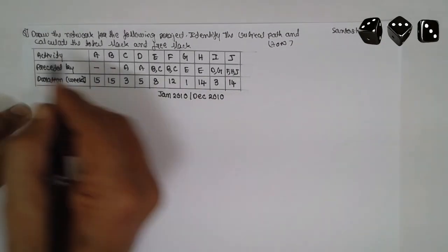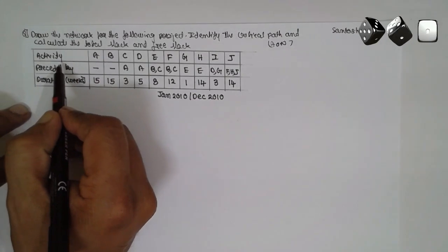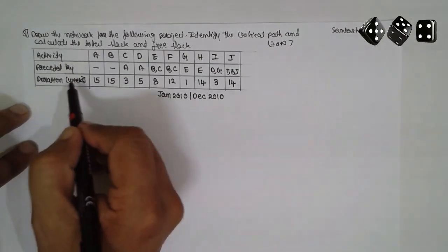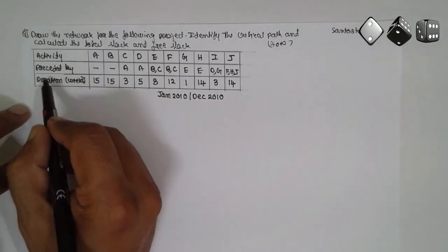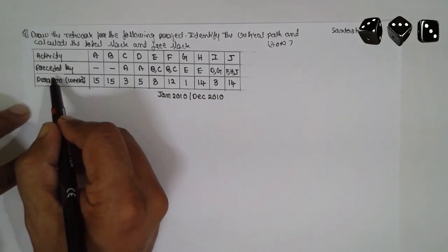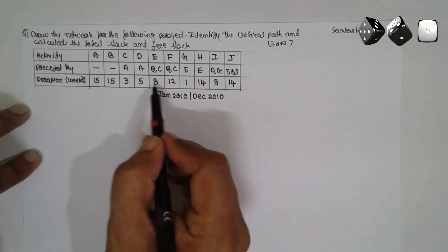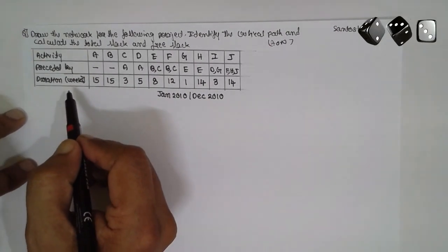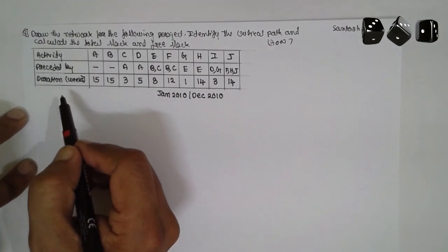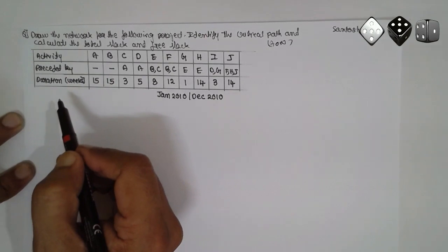The activity is given here, the duration is given here, and the precedence is given here. Based on this, I will draw the rough network diagram.